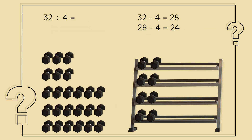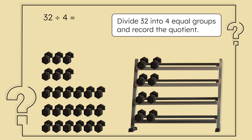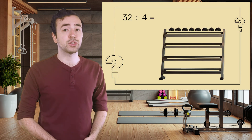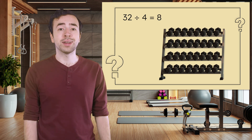We can find the number of items in each group by repeatedly subtracting four from 32, drawing a model like an array with four equal rows, and making equal groups until all 32 weights are placed. Or maybe you have another strategy you'd like to try. Pause here to divide 32 into four equal groups and record the quotient in your guided notes. Dividing 32 into four equal groups means there will be eight in each, so eight weights will go on each shelf.